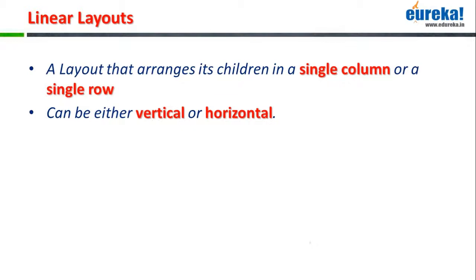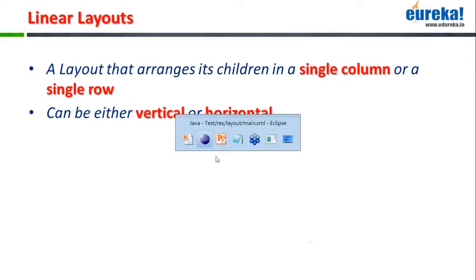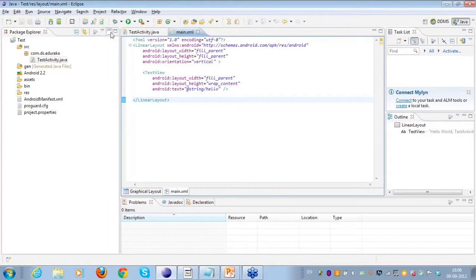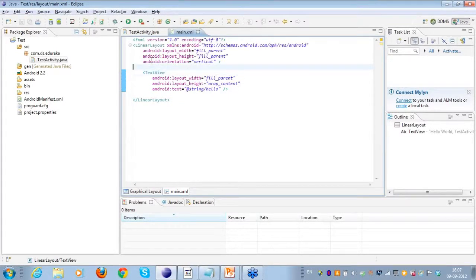When I talk about linear layouts, a linear layout is a layout that arranges its children in a single column or a single row. You can have a vertical orientation of the linear layout, or you can have a horizontal orientation of the linear layout.